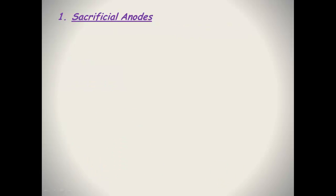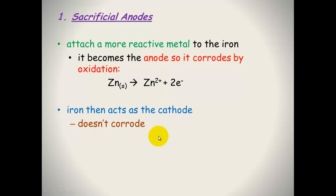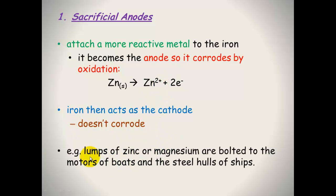The first type is a sacrificial anode. You attach a more reactive metal to the iron, something below it in the electrochemical series. This then becomes the anode and it corrodes by oxidation. So zinc, for instance, will become Zn²⁺ and produce electrons. Iron will then act as the cathode. It doesn't need to act as the anode because something below it will be acting as the anode. This is why boats and ships attach lumps of zinc or magnesium to the bottom of them. They are cheaper to corrode away than the iron or the hull of the ship.